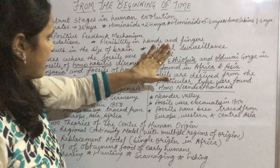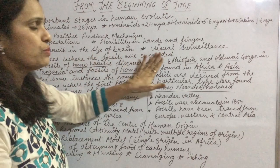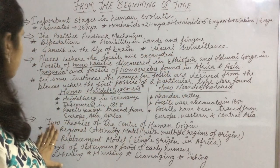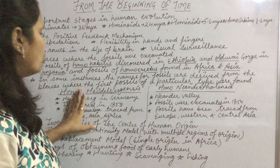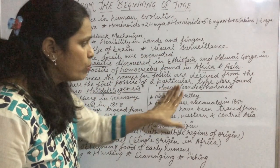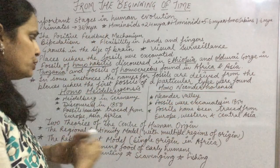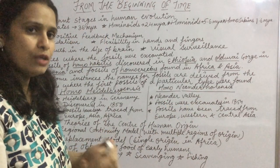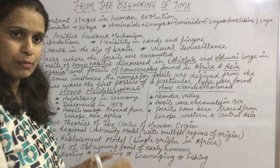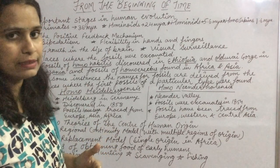So here we have completed four topics: the positive feedback mechanism, places where fossils were discovered, the difference between Homo heidelbergensis and Homo neanderthalensis, the two theories of the center of human origin — the regional continuity model and the replacement model — and the different ways of obtaining food for early humans.